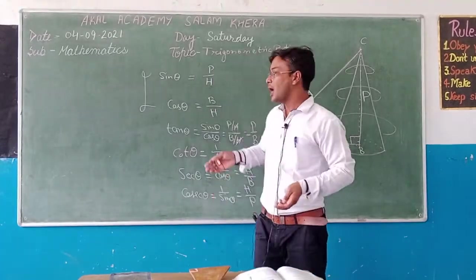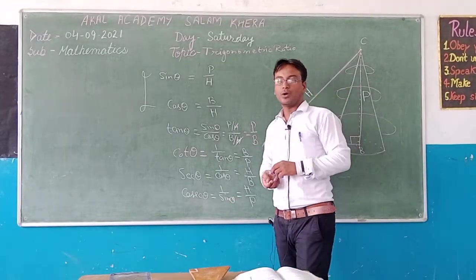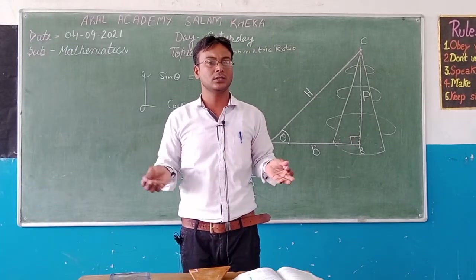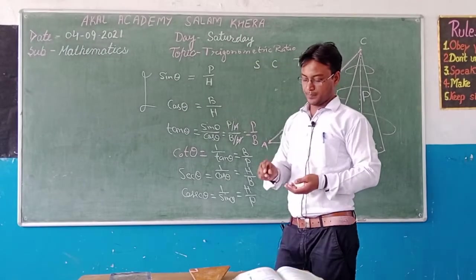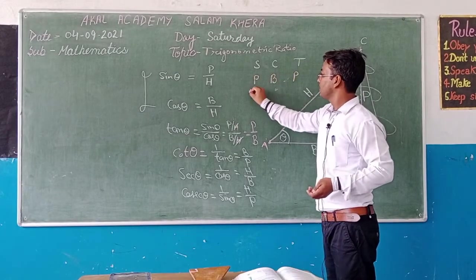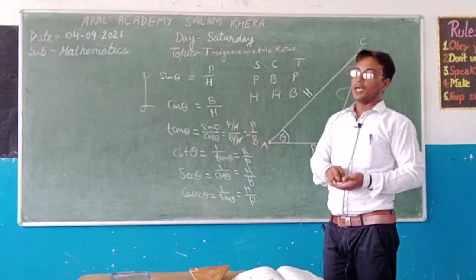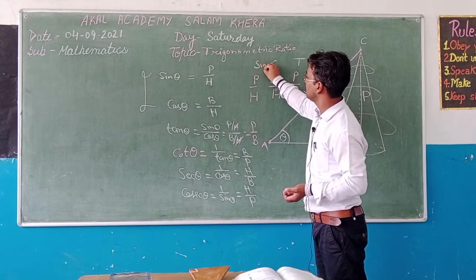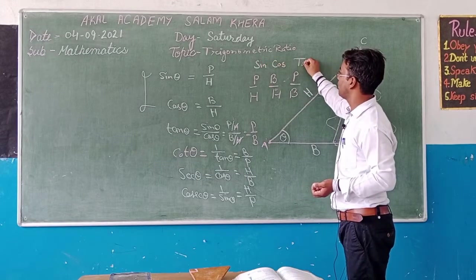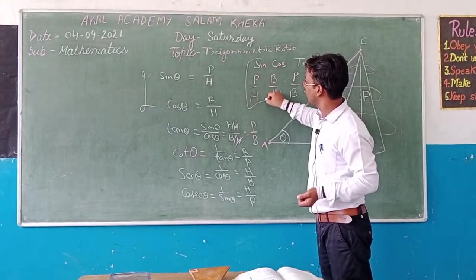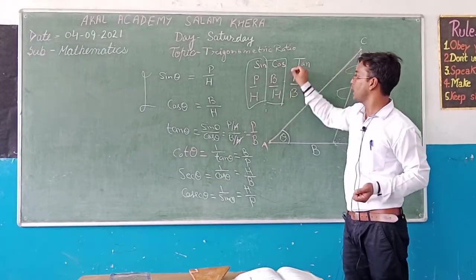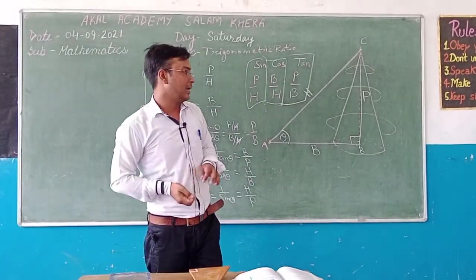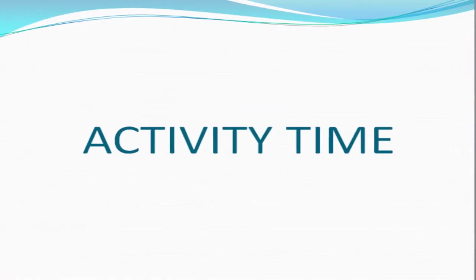These are the six ratios of trigonometry. Now the question is: how can you learn them? For this we have some tricks. One commonly used trick uses S for sin theta, C for cos theta, and T for tan theta. The sin formula is P by H, the cos value is B by H, and the tan value is P by B. This is one trick, and you can also practice it using a model which I will show you.